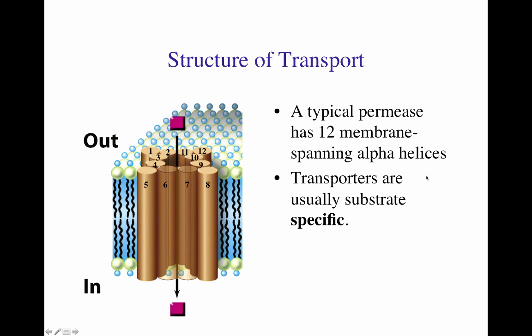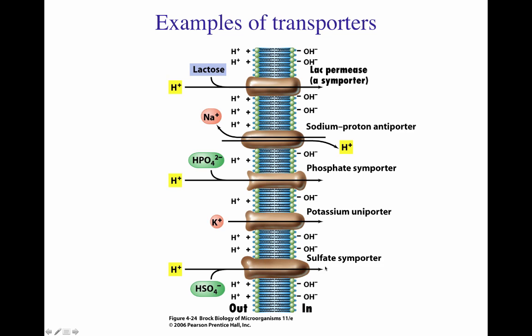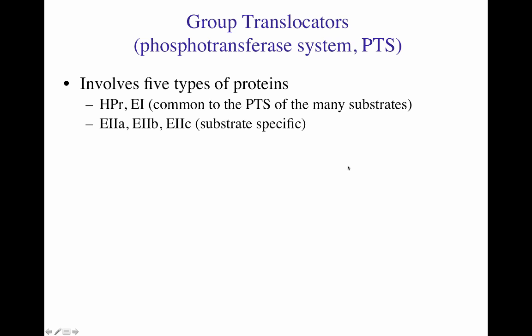Examples of these transporters include: a sulfate symporter using the proton gradient to bring sulfate ions inside; a potassium uniporter allowing transport of potassium inside the cell; a phosphate symporter using the proton motive force to bring phosphate ions in; a sodium-proton antiporter where protons go in and sodium ions go out; and the lactose permease, a symporter allowing protons to come in at the same time that lactose is coming inside.